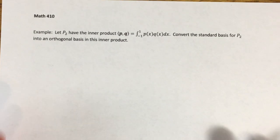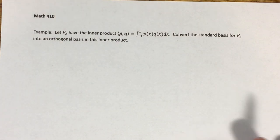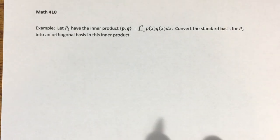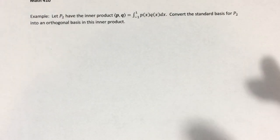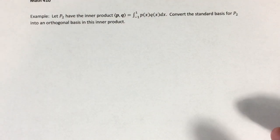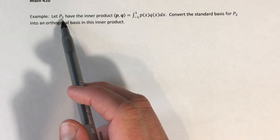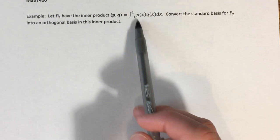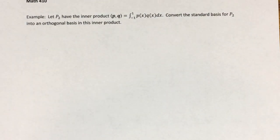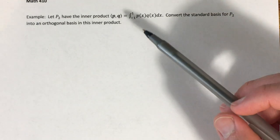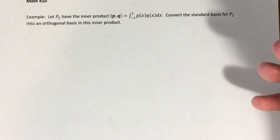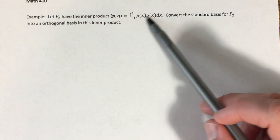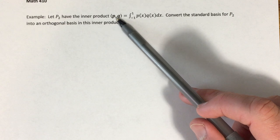One last example. Even though we've been talking about general inner product spaces, we've really been doing all our examples in R3. So we want to do at least one example in some other type of inner product space. This is an example that's actually worked out in your book, and I'm doing it here because it leads to an important concept in other areas of math called Legendre polynomials. We're going to be working in the inner product space P2, defining this inner product on it — it looks like the one defined on the space of continuous functions on the interval [-1, 1], and P2 is just a subspace of that vector space.